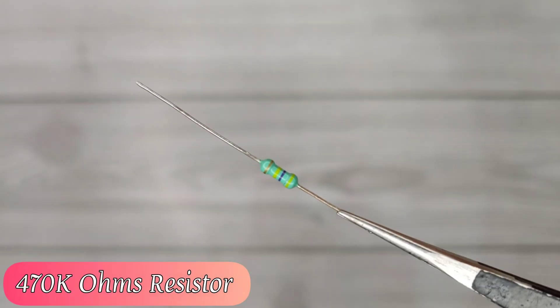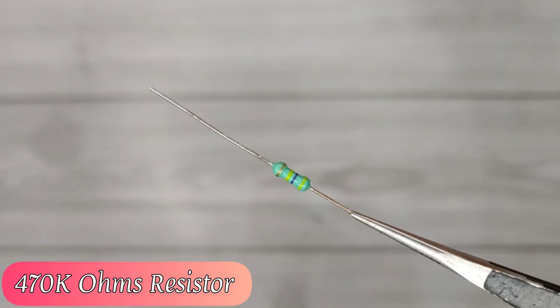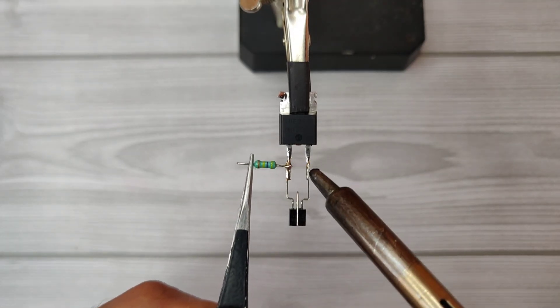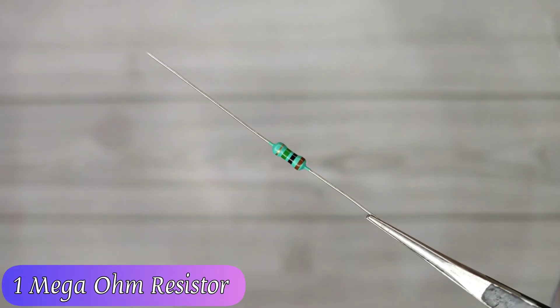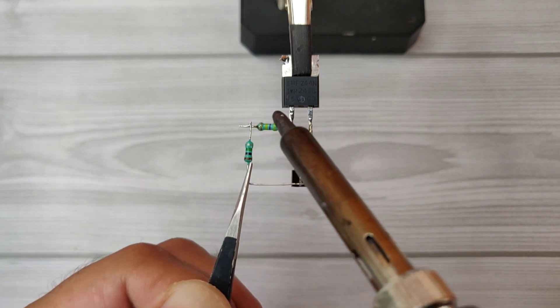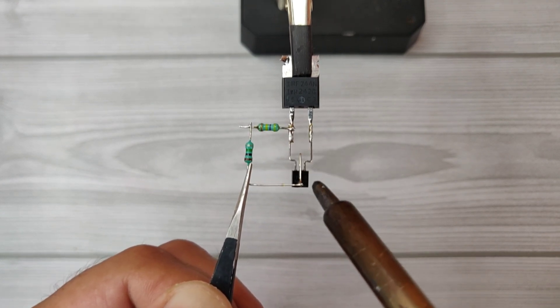Take 470k ohms resistor, solder on gate pin of MOSFET. Take 1 mega ohm resistor, solder between 470k resistor and base of transistor.